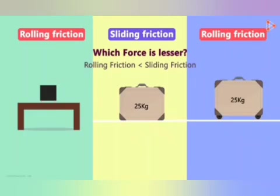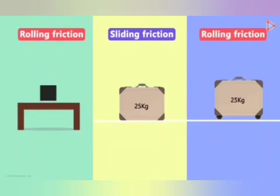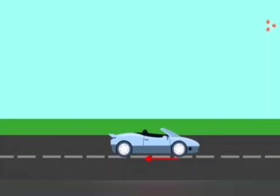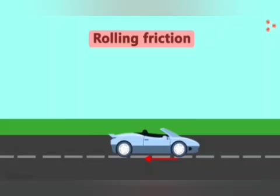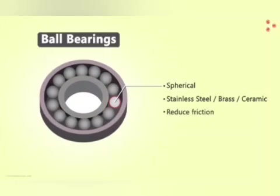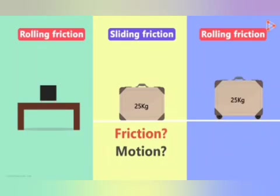That's why attaching wheels makes it easier to move objects, and moving the box on cylindrical pencils is also easier. Examples where rolling friction reduces friction include car tires — when the car moves, the ground applies rolling friction on the tires. Ball bearings are spherical metal balls used in mechanical structures with moving parts, generally made of stainless steel, brass, or ceramic. They reduce friction greatly, which in turn reduces the wear and tear of machine parts.